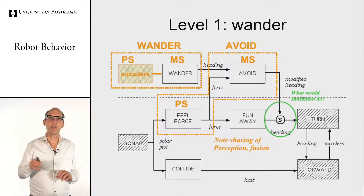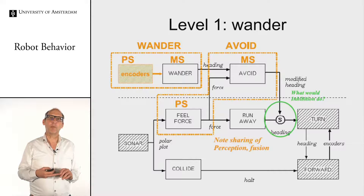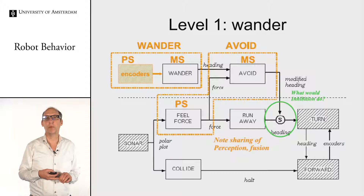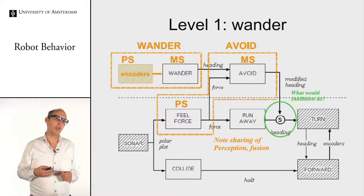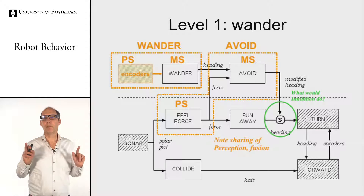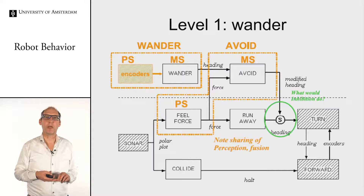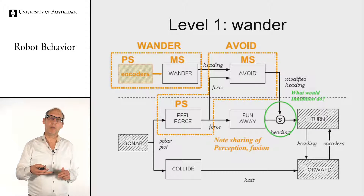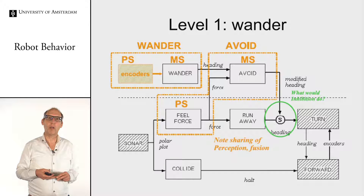On the right side you can see — with a green circle — the first real example of subsumption. The 'avoid' behavior has a certain heading that overrules the heading submitted by 'run away.' Level one overrules level zero. The control signal is given with a timestamp for 10–20 seconds; if no new subsumption signal arrives, then 'run away' takes over again. So you can only overrule it for a short period, and every time you want to overrule again, you have to send a new subsumption signal.